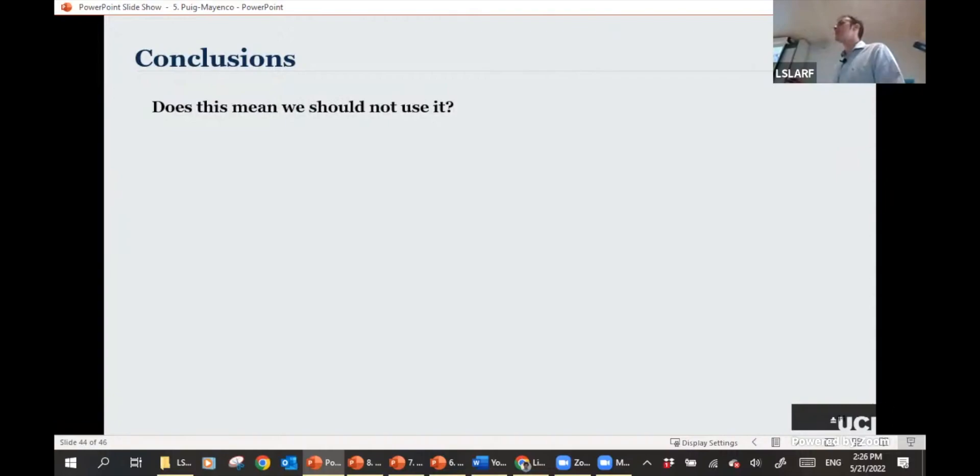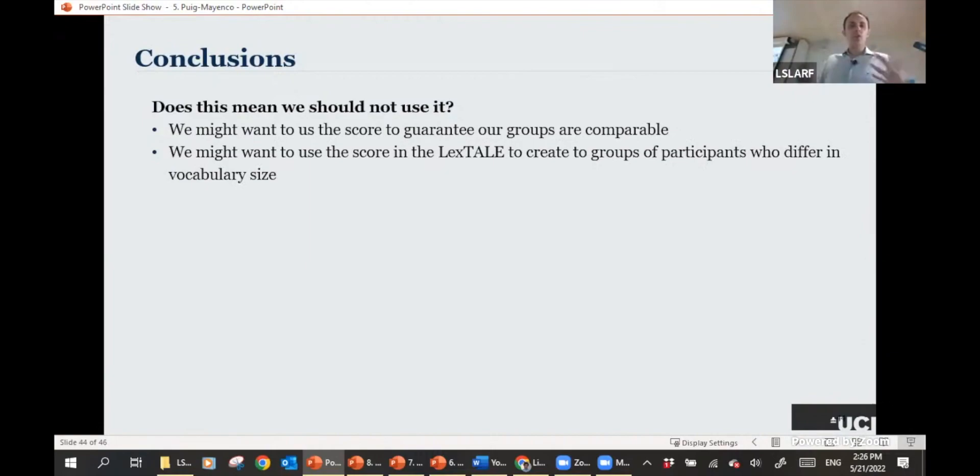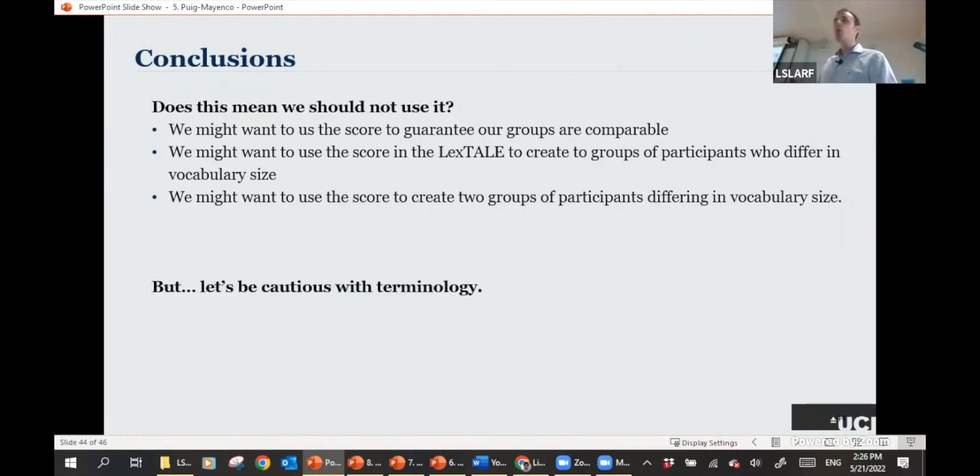So I guess some of you might be wondering, are you telling us not to use it? Well, no. Let's do whatever we think is best in our studies. We might want to use it if we want to guarantee that our groups are comparable, if we want to have they've got the same vocabulary size. We might want to use the score in the LexTALE to create groups of participants who differ in vocabulary size. As Lemhöfer proposes, perhaps we can create two groups. Or perhaps we want to use the LexTALE as a kind of a screening tool to say, okay, we only want advanced participants. Let's first screen them with the LexTALE, and then let's test them on something else. If we need to talk about proficiency, perhaps we don't need to be talking about proficiency so much if it is not relevant for our own studies. So I guess the point or take-home message of the presentation is, let's just be careful with the tools we use and the terminology we use to talk about them.